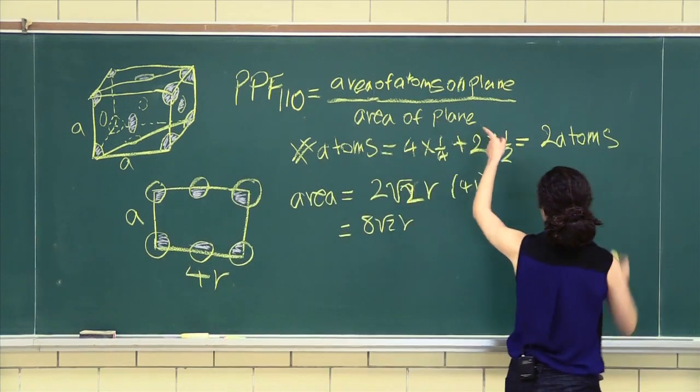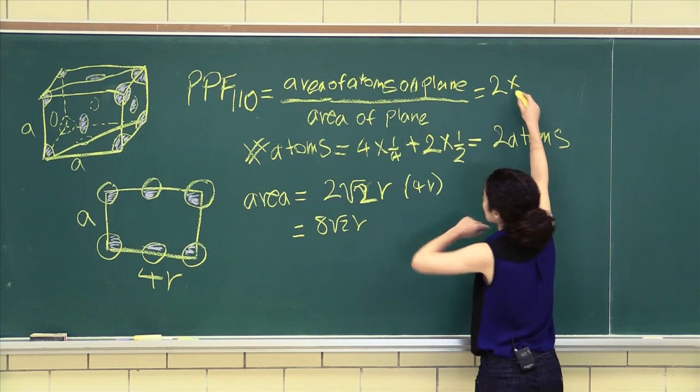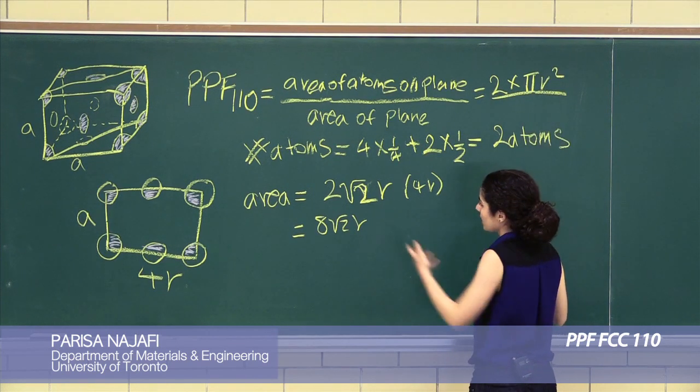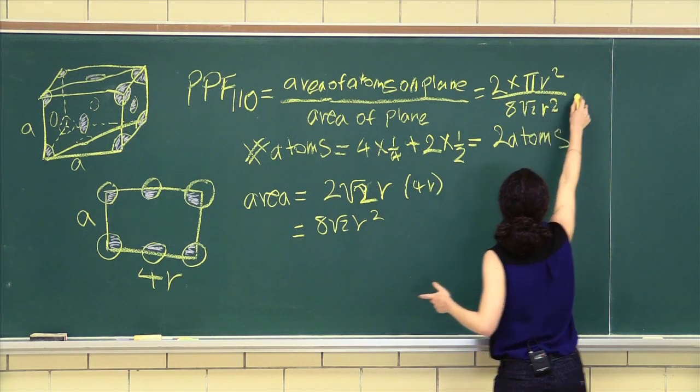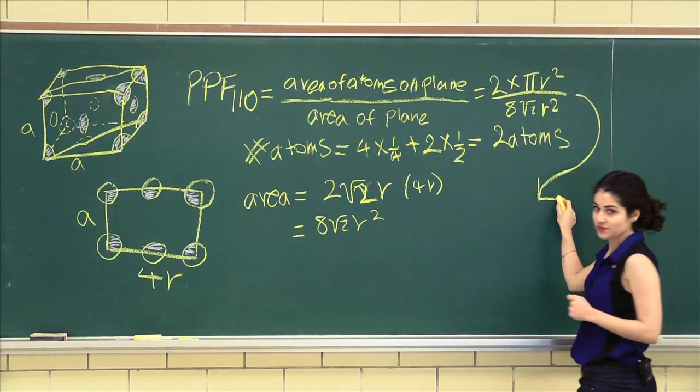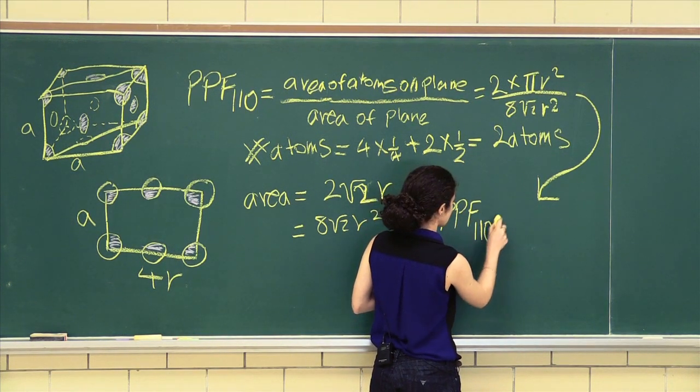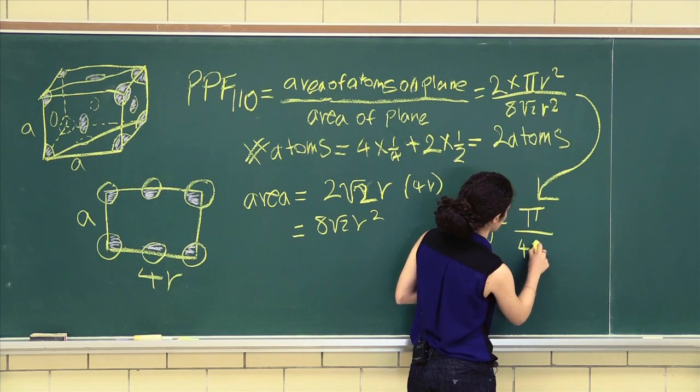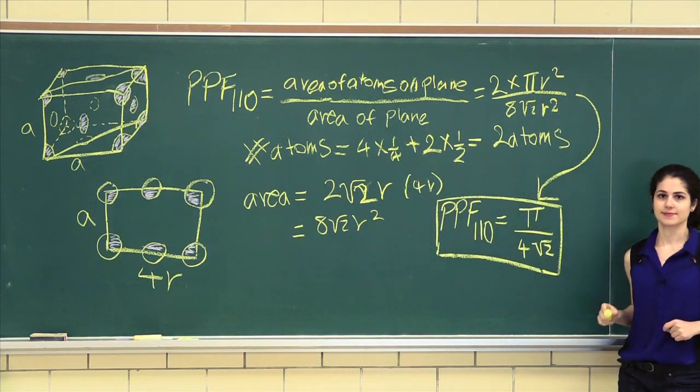Now let's continue with our first equation. Area of the atoms on the plane. So we have 2 atoms times the area of 1 atom is a circle, πr². And the area of our plane is 8√2r². And so if I were to continue that down here, we will get the planar packing factor of the 1, 1, 0 plane is. So let's calculate that, π all over 4√2.